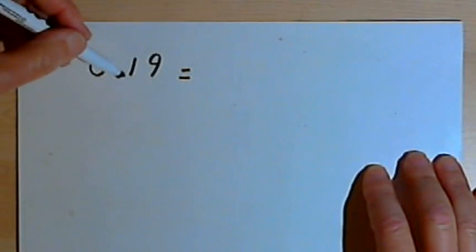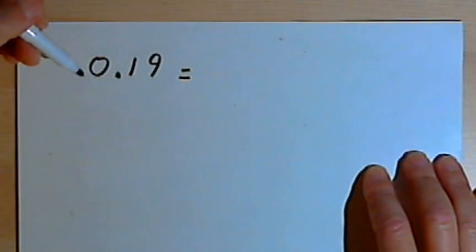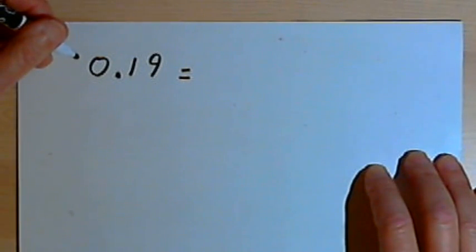I've got the number 0.19 and I want to convert this into a fraction. I'm going to show you two ways to do this. The first method goes like this.